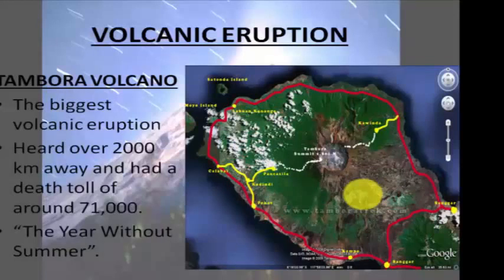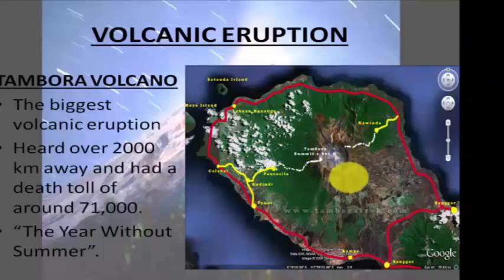The Mount Tambora eruption of 1815 was one of the most powerful explosions in recorded history, occurring on the island of Sumbawa. This volcano reached its climax on April 10th, 1815, and was followed by between six months and three years of increased volcanic activity. It was heard over 2,000 kilometers away and had a death toll of around 71,000 people. Due to the explosion, 1816 became known as the Year Without Summer.